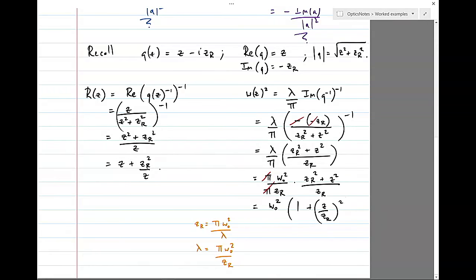So to make this less unwieldy, let's divide through by Zr squared. And we'll get 1 plus Z on Zr all squared. This allows us to write down what W of Z is. Which is the same result that was in the notes. So we've now shown exactly what these two things are. The real radius of curvature as a function of Z. And how big the beam is as a function of Z.